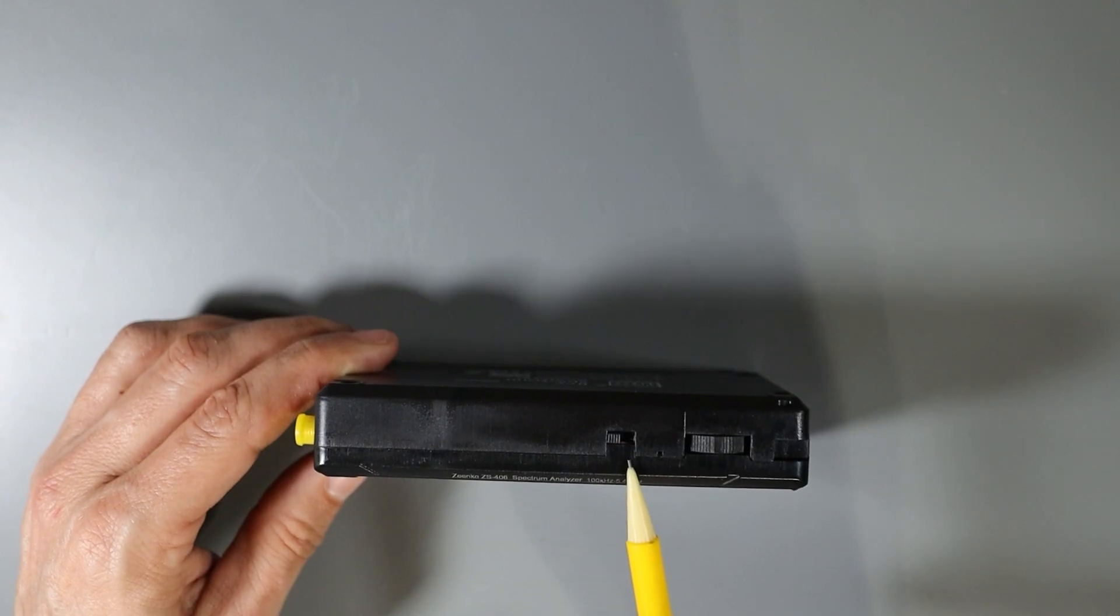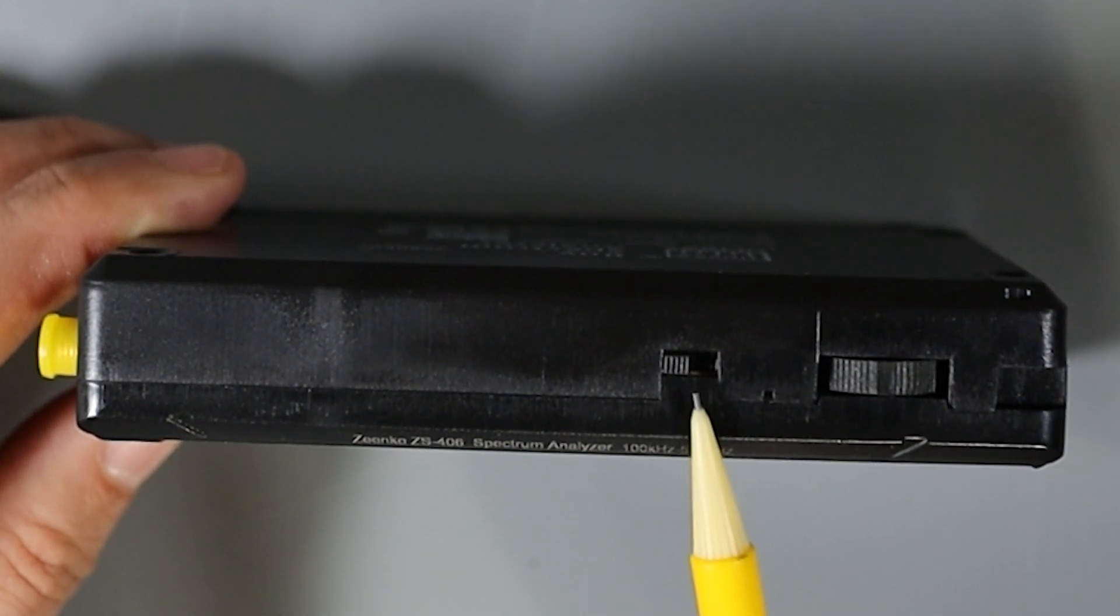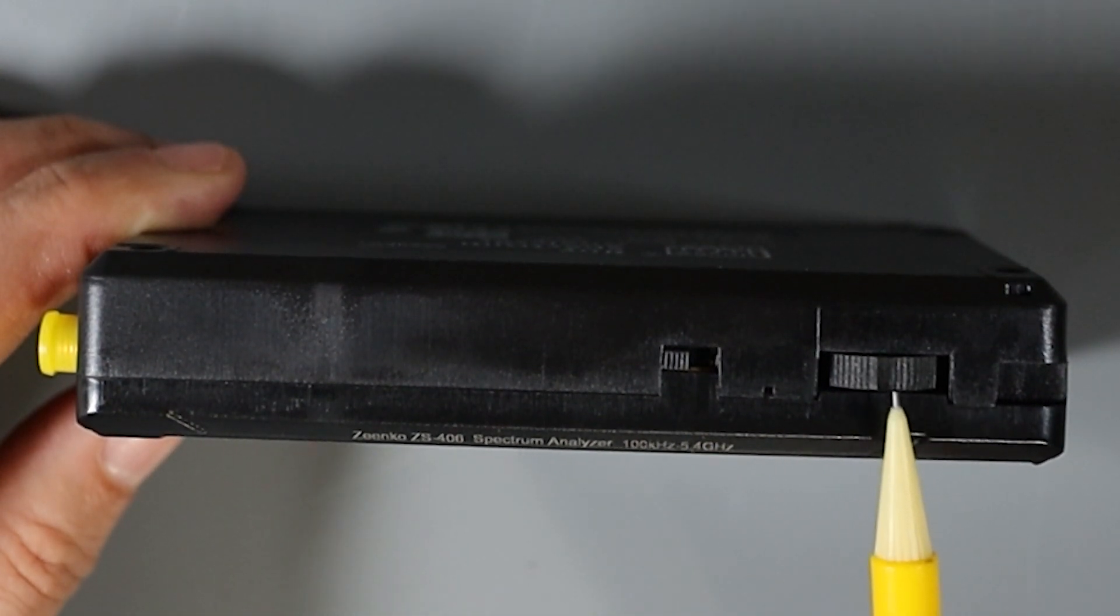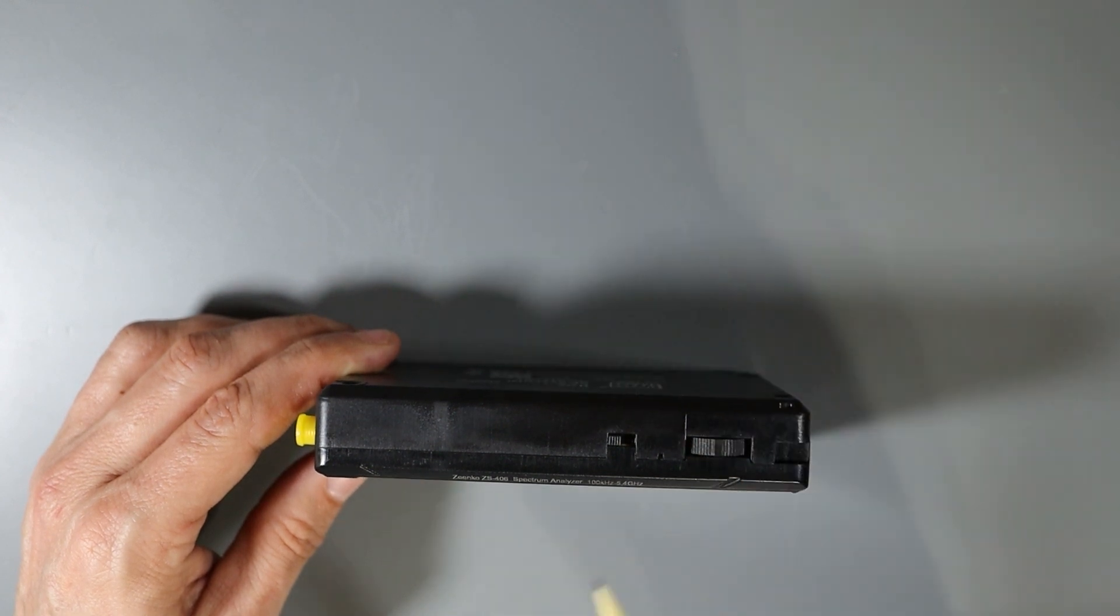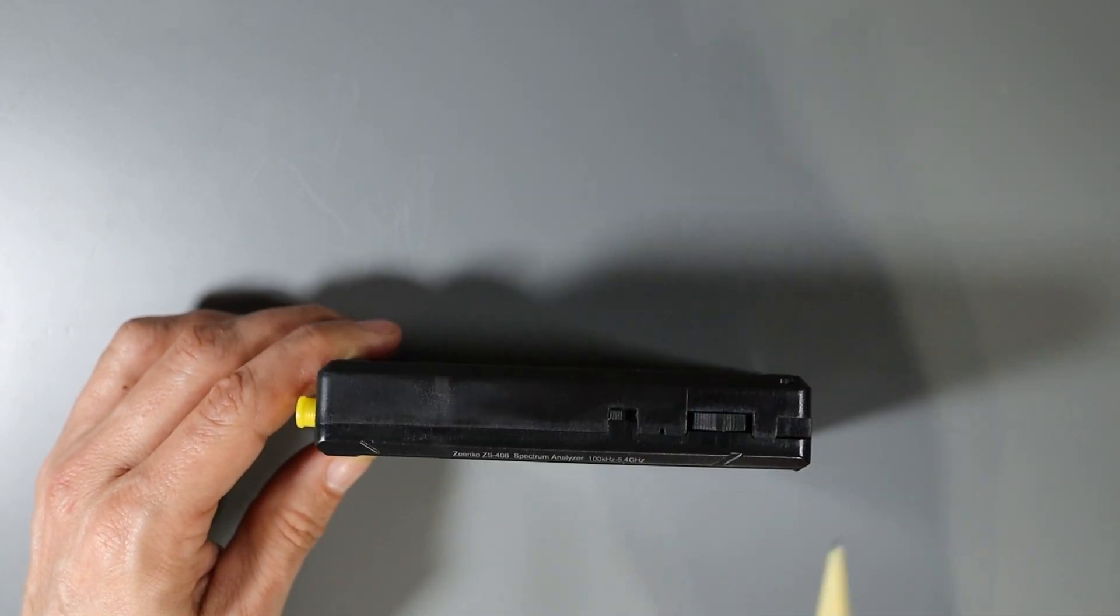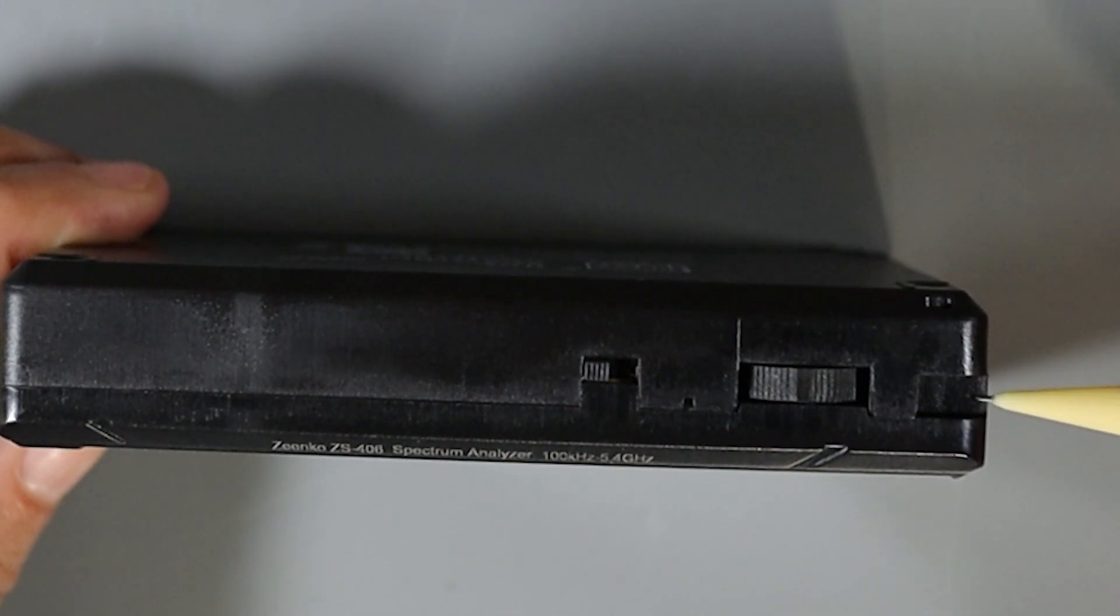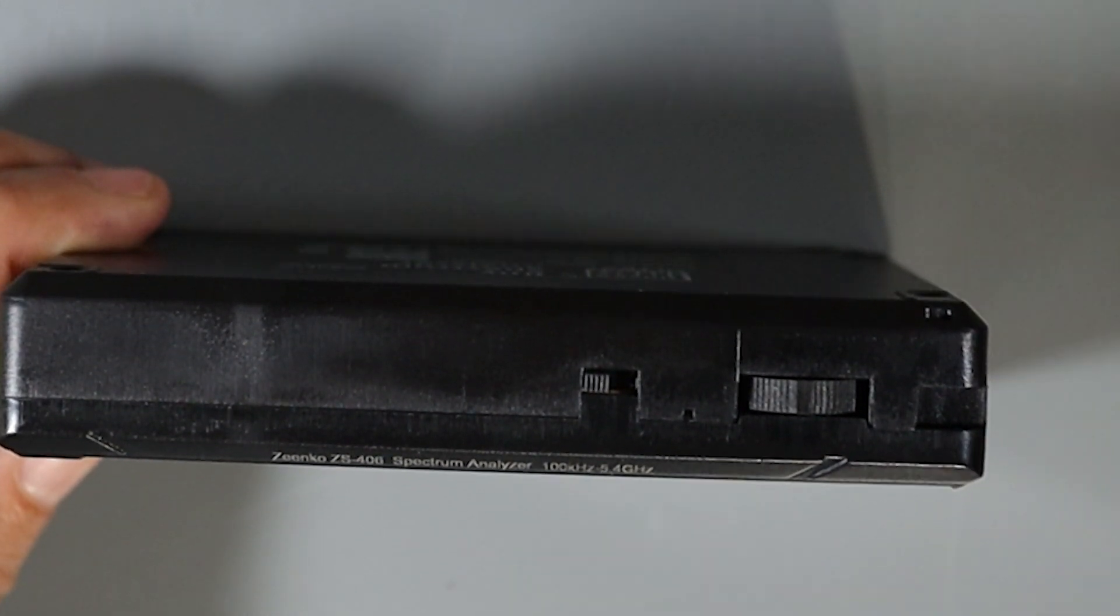Up on top of the TinySA, we'll find the on and off switch here and the navigation rocker control here. This also has a press function to allow you to select certain items when navigating through the menu. And then over here on the right is a little anchor point for the wrist strap.